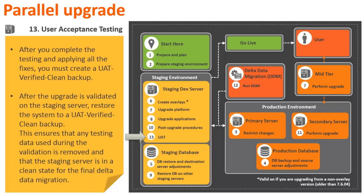In Stage 13, perform the user acceptance testing. After you complete the testing and apply all the fixes, you must create a UAT verified clean backup. After the upgrade is validated on the staging server, restore the system to a UAT verified clean backup. This ensures that any testing data used during the validation is removed and that the staging server is in a clean state for the final delta data migration.